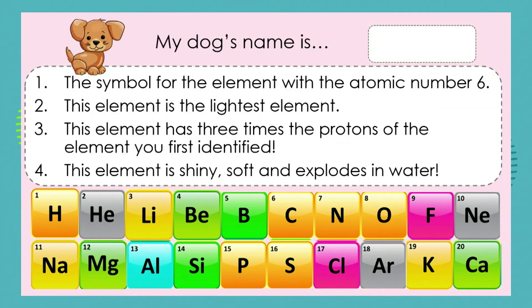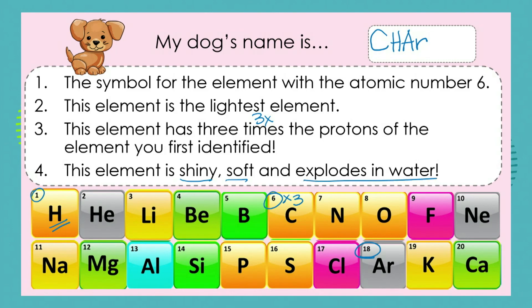What's my dog's name? Try to work it out. The symbol for the element with atomic number 6 — that's C for carbon. The lightest element is H because it has only one proton. This element has three times the protons of the first element we identified: 6 times 3 is 18 — that's argon, Ar. This shiny, soft element that explodes in water is lithium, Li. So my dog's name is CHARLIE!